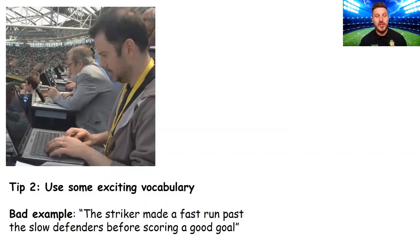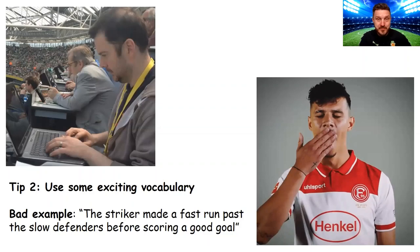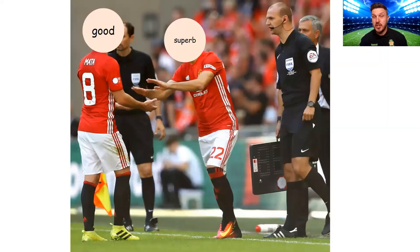So I'm going to use a bad example: 'The striker made a fast run past the slow defenders before scoring a good goal.' Okay, but it's going to get a little bit boring after a while with such basic vocabulary. So we're going to have a little game — substituting basic vocabulary out and a little bit more exciting, advanced vocabulary in, as seen in this graphic. We're subbing out the word 'good' and bringing on the word 'superb.'